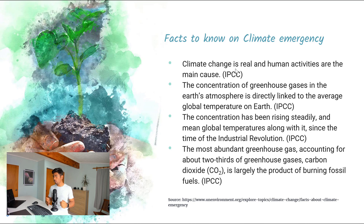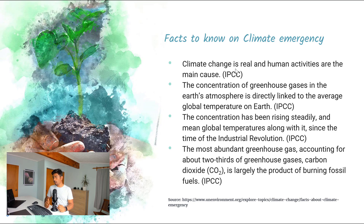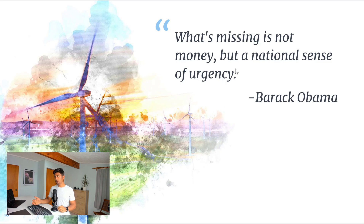The climate change is real and human activities are the main cause of this problem. The concentration of greenhouse gases in the Earth's atmosphere is directly linked to the average global temperature. That concentration has been rising steadily, and mean global temperature along with it, since the time of the industrial revolution. The most abundant greenhouse gas — accounting for about two-thirds — is carbon dioxide, largely the product of burning fossil fuels. The source link is available on the slide, taken from unenvironment.org.